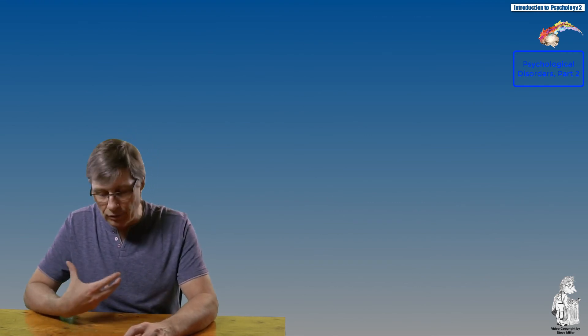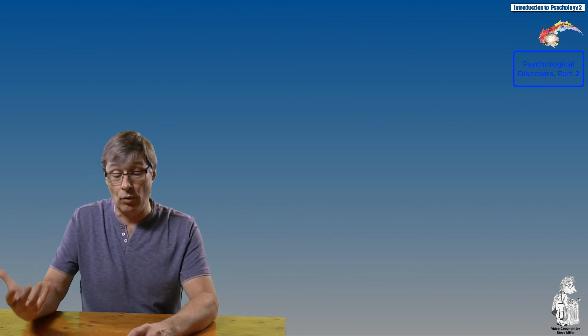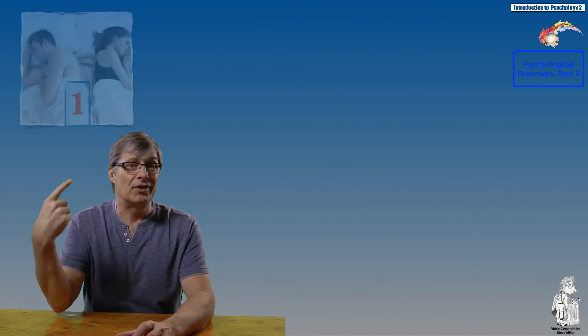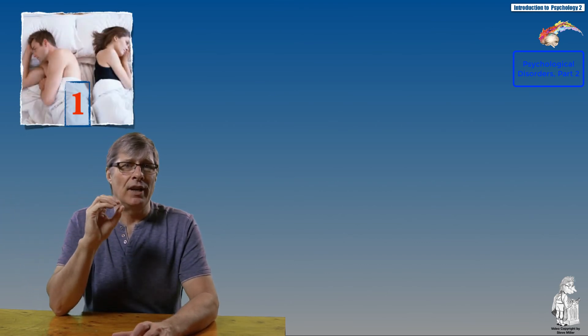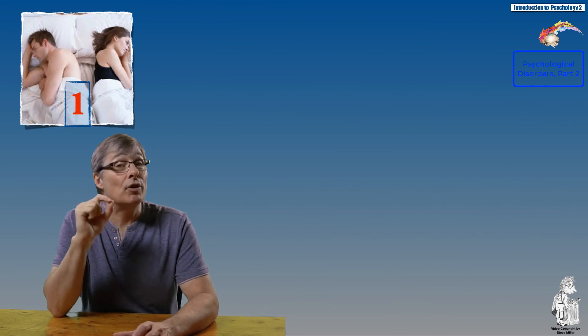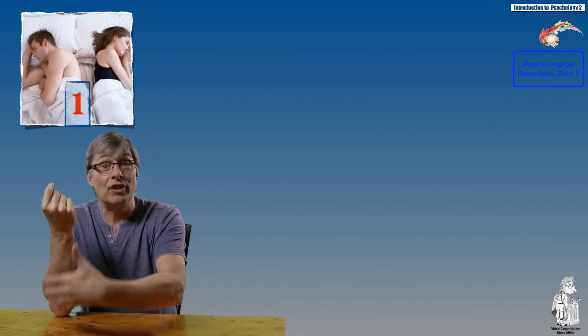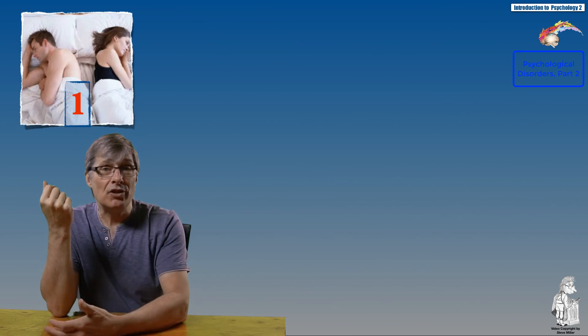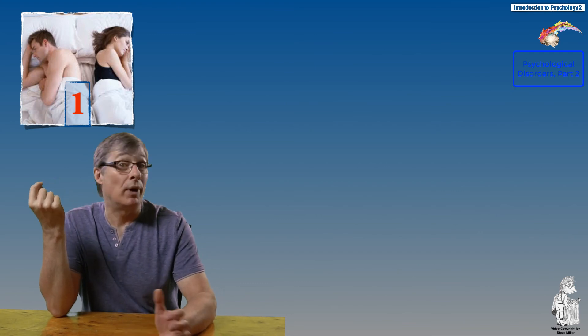Lastly, we're going to quickly review sexual disorders. What we're going to be touching on is very limited given what there is in a full course on abnormal psychology. Sexual disorders are categorized into sexual dysfunction—this includes persistent problems that cause marked distress and interpersonal difficulty. They may involve sexual desire, the inability to have sexual desire or limited arousal or pleasure associated with sex or orgasm. Most common are male erectile disorder and female orgasmic disorder.